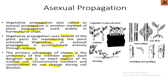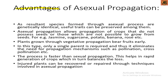Here are the advantages of asexual propagation: the resulting species formed through the asexual process are genetically identical, so useful traits can be preserved among them. Asexual propagation allows propagation of crops that do not possess seeds — those which are not possible to grow from seeds — for example, jasmine, sugarcane, potato, banana, rose, etc. Plants grown through vegetative propagation bear fruits early. In this type, only a single parent is required, eliminating the need for pollination or cross-pollination.